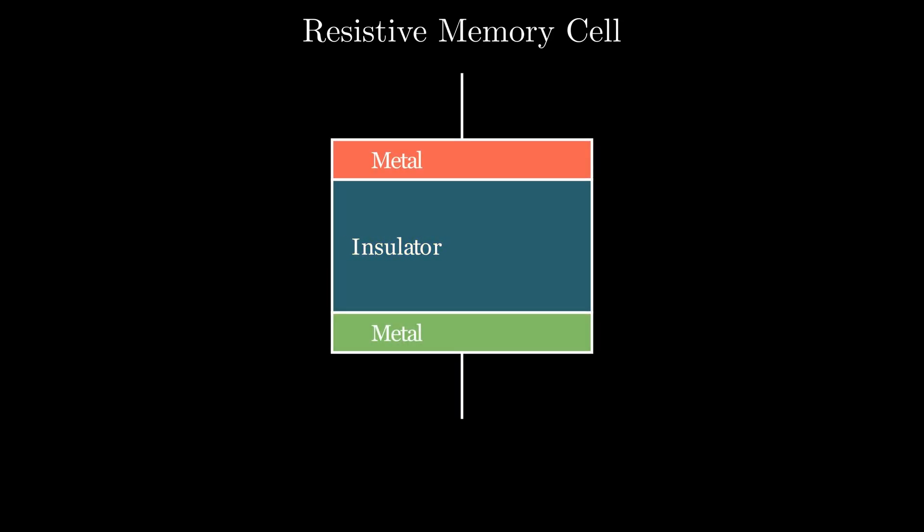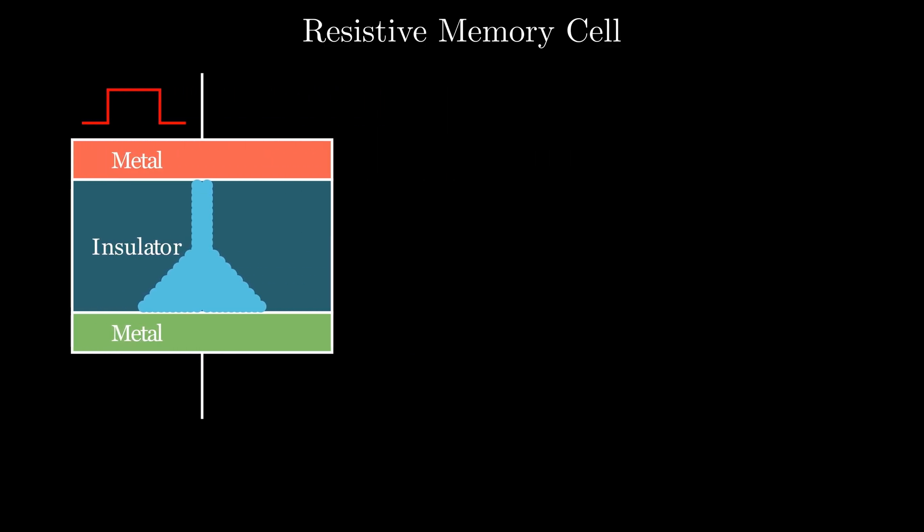Instead, it uses resistance. Each memory cell is like a tiny sandwich made up of metal layers with an insulator in between. When a voltage pulse is applied, the atomic structure inside the insulator changes, either by migration of metal ions or by shifting defects or altering how it's crystallized. This change affects how easily current flows through it, its conductance.